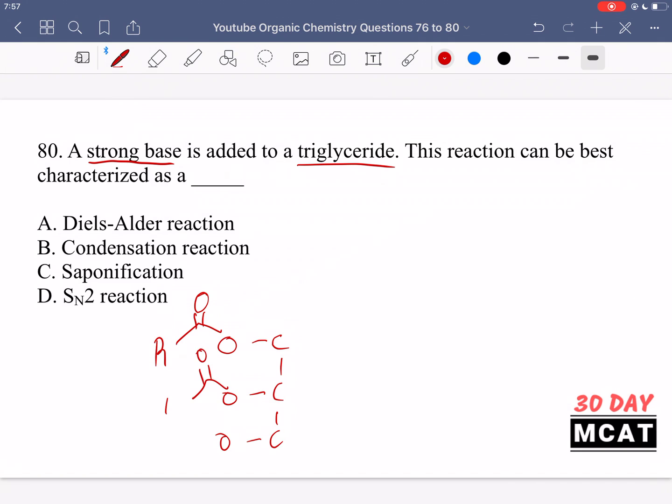So this is a triglyceride, and then these are all H2. If we react with a strong base such as NaOH or KOH, what happens is we get those acyl groups separated. We get that glycerol also separated. This type of reaction is called a saponification. Just remember that saponification is when we take some triglyceride and react it to get the free fatty acid. So it would look like this - free fatty acid, and then we would also get that glycerol molecule.